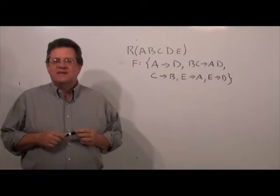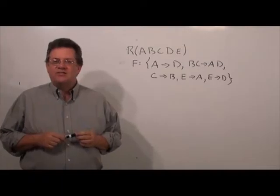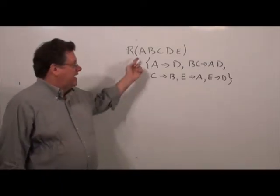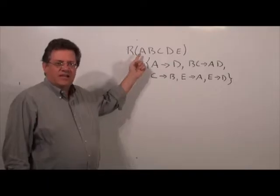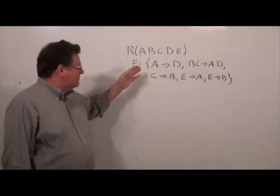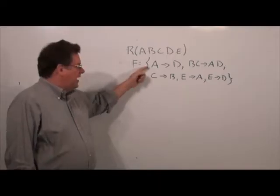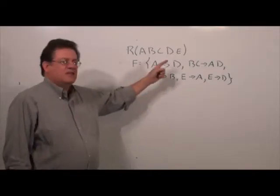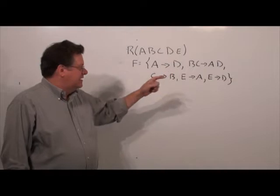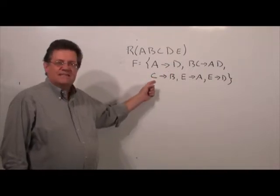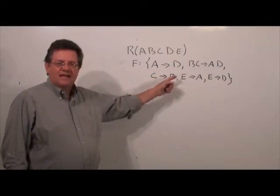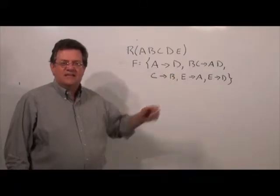Let's take a look at an example of how we'd actually find a minimal cover. Here we have a relation R with attributes A, B, C, D, and E, and a set of functional dependencies where A determines D, B C determines A D, C determines B, E determines A, and E determines D.